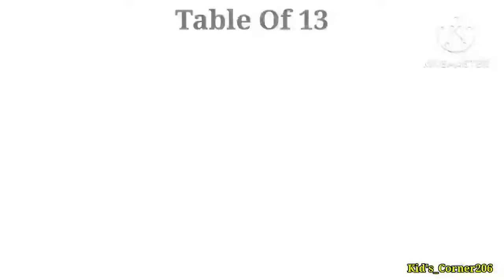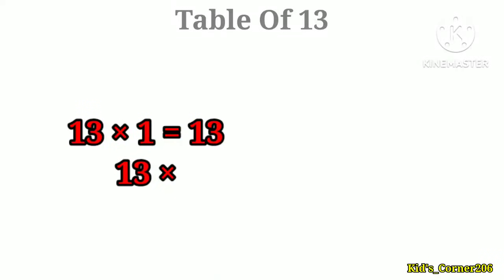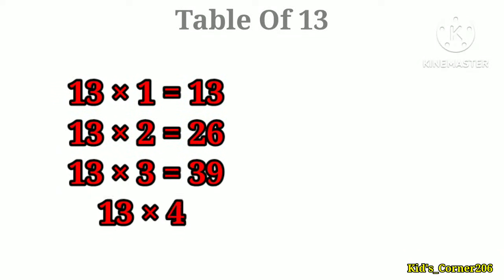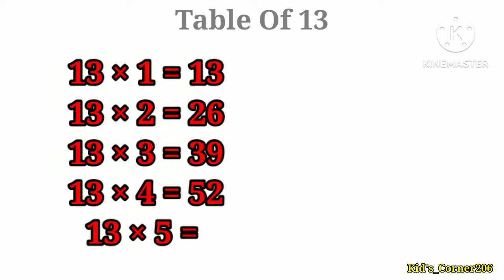Table of 13. 13 ones are 13, 13 twos are 26, 13 threes are 39, 13 fours are 52, 13 fives are 65.